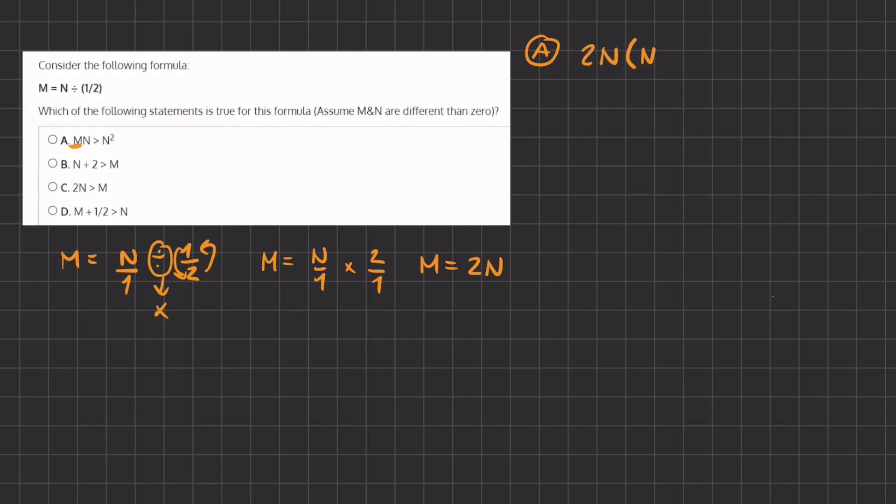we have 2N times N is greater than N squared. Now let's simplify the term on the left hand side, and N times N gives us N squared, so we have 2N squared is greater than N squared.